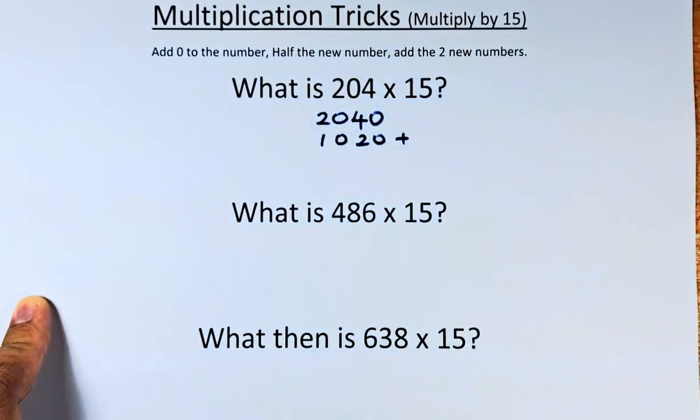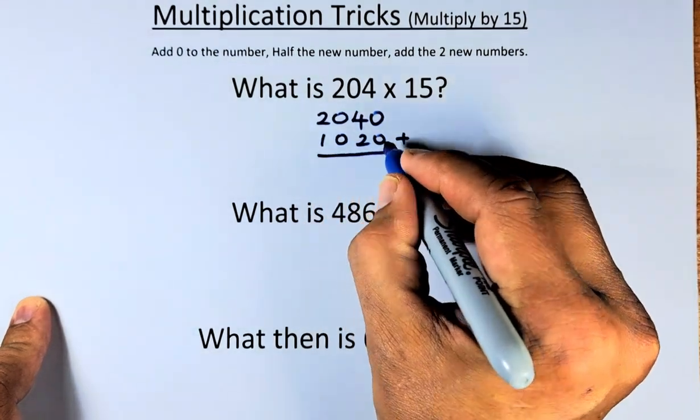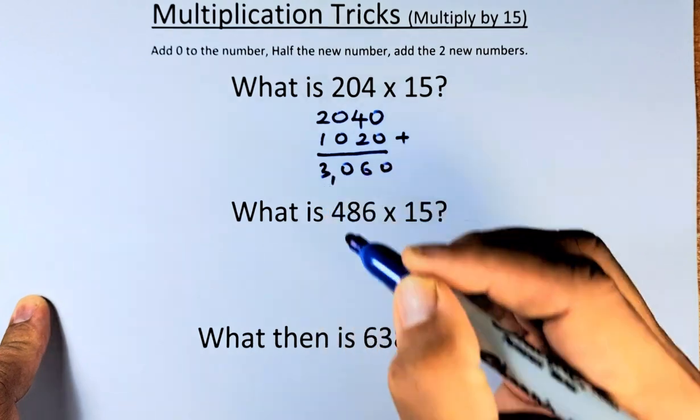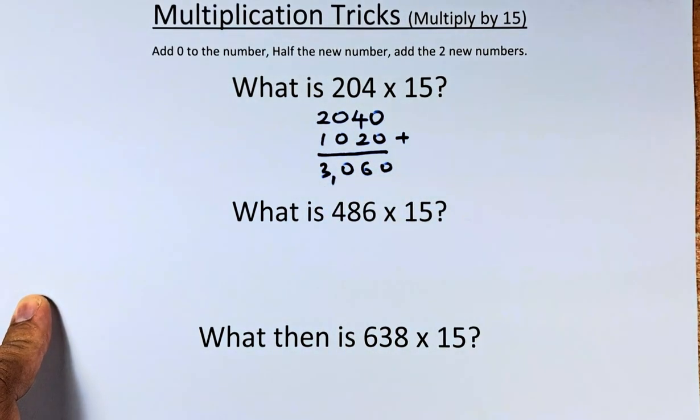Then we add the two numbers together. The result is 3060. So 204 times 15 equals 3060. Great!